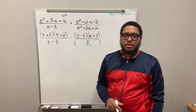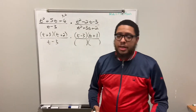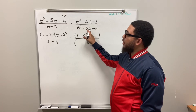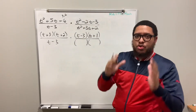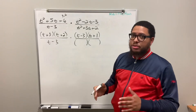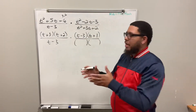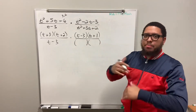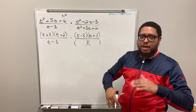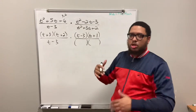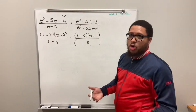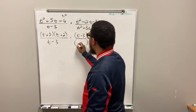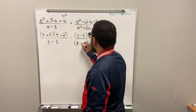Same thing in the denominator — what factors of positive 2 add up to positive 3? Well, 2 is prime so there's no choice: it's got to be 2 and 1. 2 times 1 is 2, and 2 plus 1 is 3. So I do t plus 1 and t plus 2. Now everything is factored. If you can factor, these problems will be easy. If you can't, they'll be difficult — not because the problems themselves are hard, but because factoring is the prerequisite.